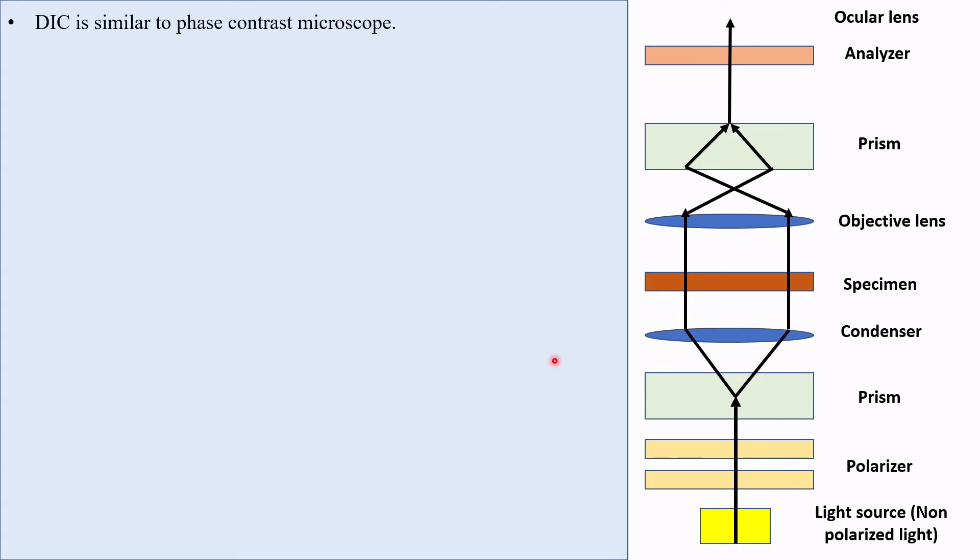DIC is similar to phase contrast microscope in that they use interference patterns to enhance contrast between different features of a specimen. The difference between phase contrast and DIC is a polarizer is added in DIC which is absent in phase contrast.